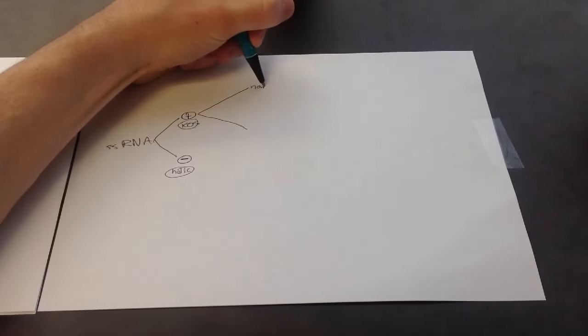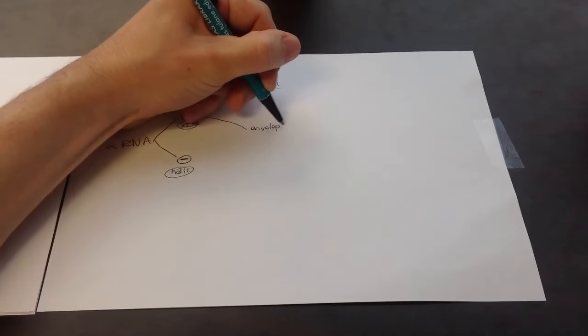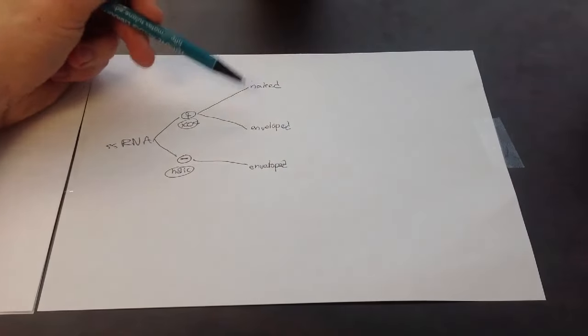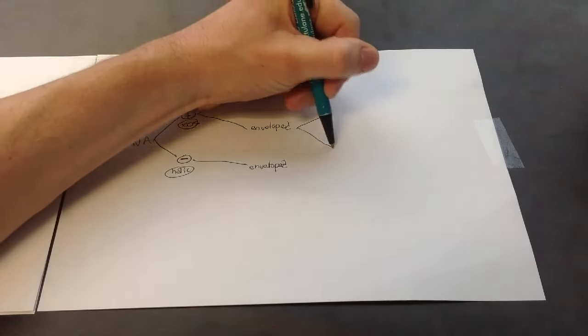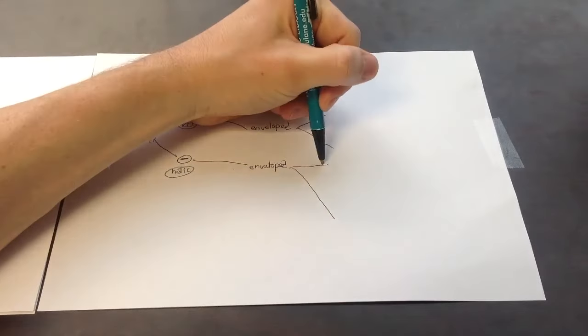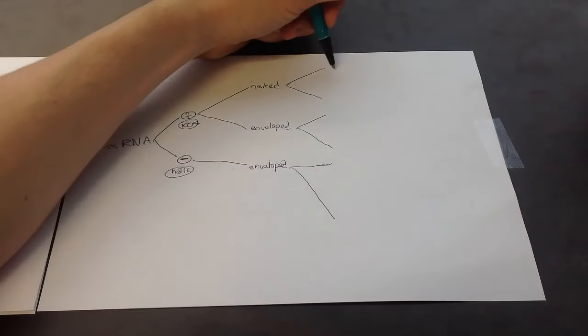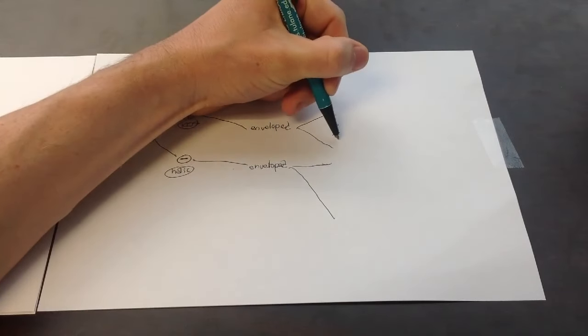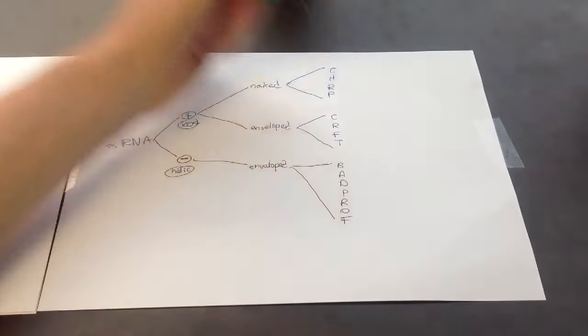And then we look at whether the envelope is there or not. So naked. Enveloped. And enveloped. We have naked, enveloped, enveloped. And the mnemonic for the families for this is pretty big. It's chirpy, crafty, bad prof. So chirpy, C-H-R-P, crafty, C-R-F-T, bad prof, B-A-D-P-R-O-F.